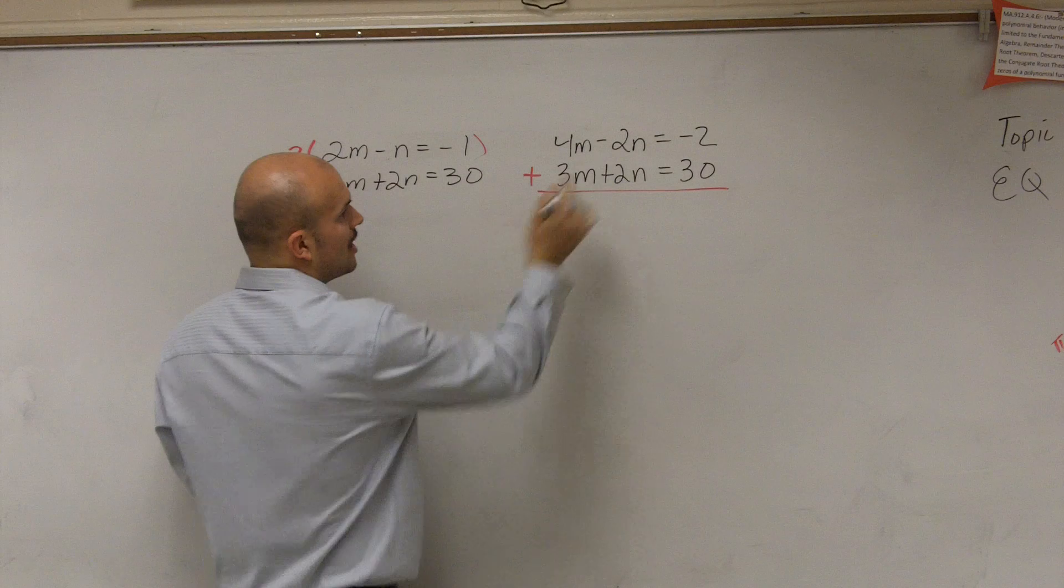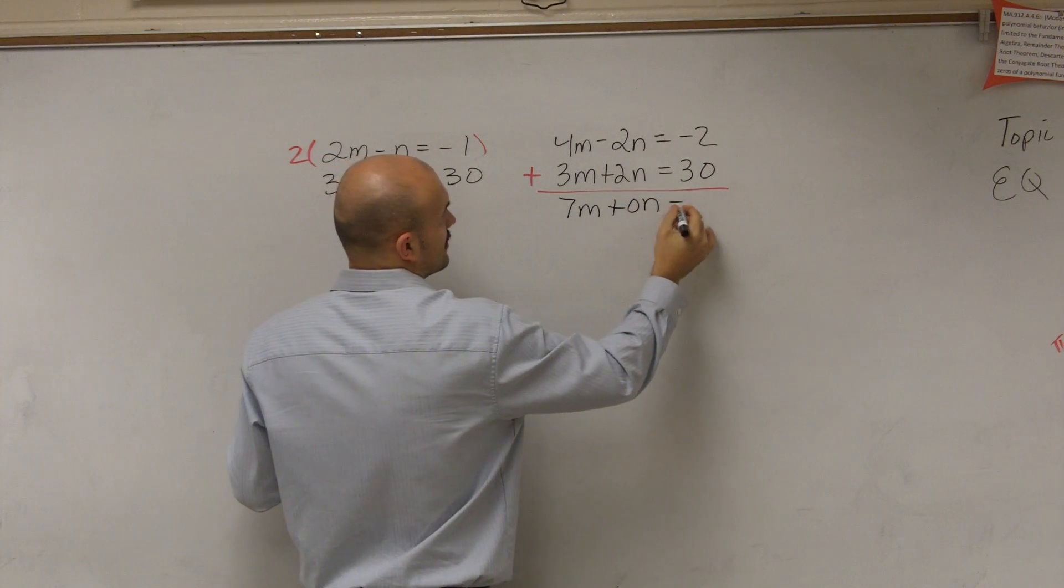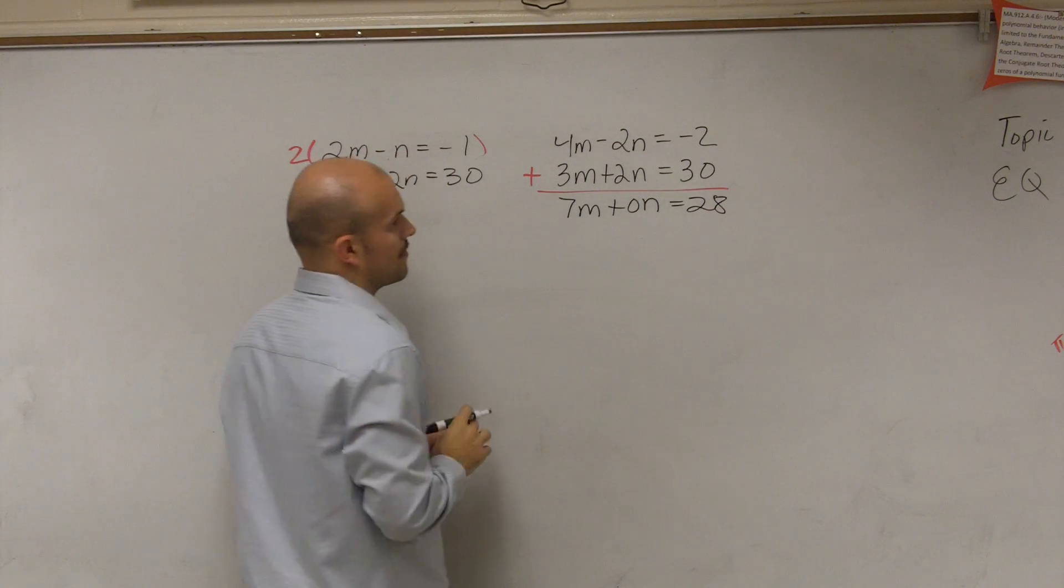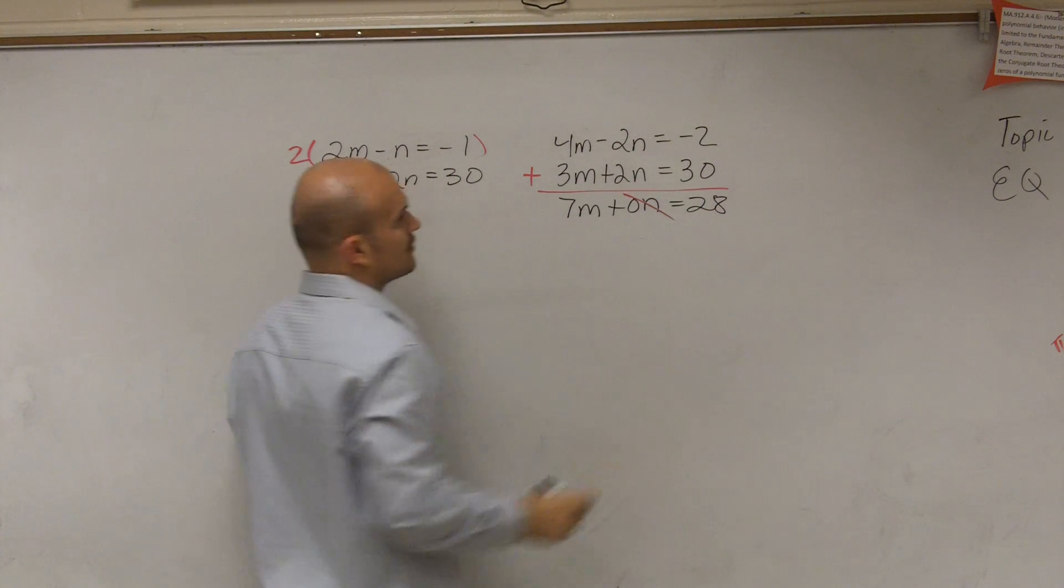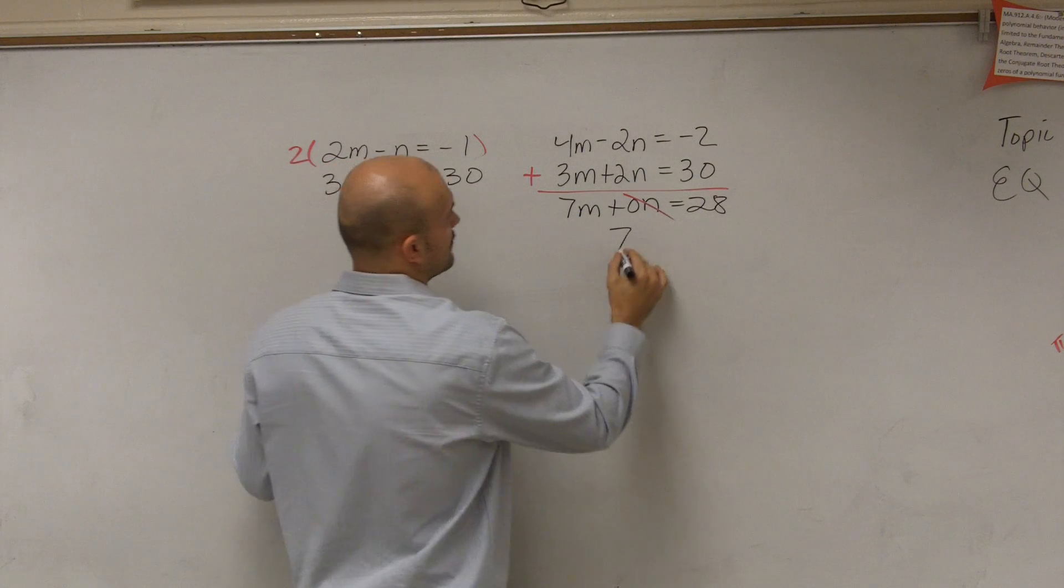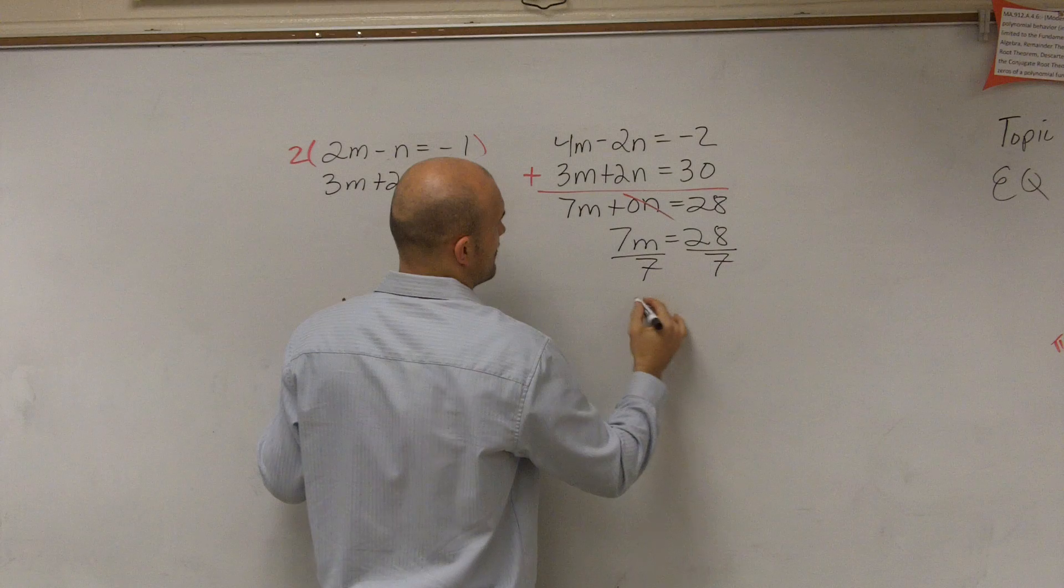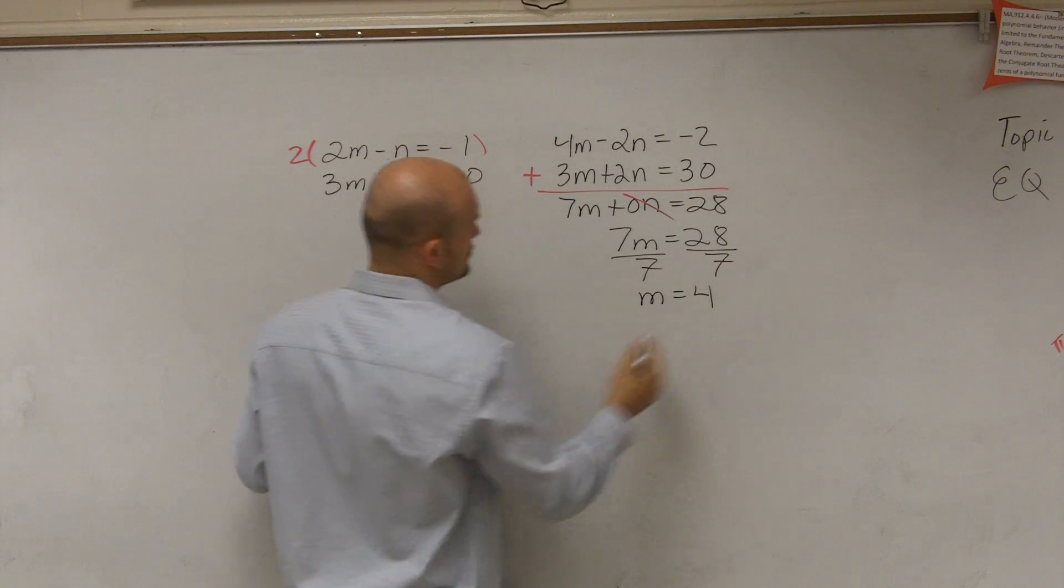By adding them up, I now receive 7m plus 0n equals 28, which those cancel out, right? Because 0 times anything is 0. So therefore, I have 7m equals 28, divide by 7, m equals 4.